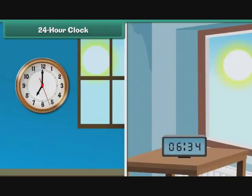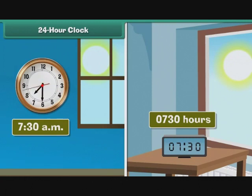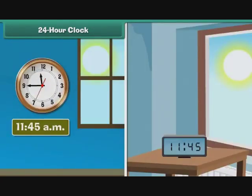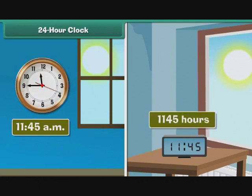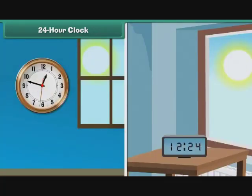It denotes the start of the day as 0000 hours and the end as 2400 hours. The first two digits represent hours and the last two represent minutes. Both the 12-hour and 24-hour clocks denote the first 12 hours of the day in an identical manner. 7.30 a.m. on the 12-hour clock is represented as 0730 hours on the 24-hour clock. Similarly, 11.45 a.m. is represented as 1145 hours. The 24-hour clock denotes all times corresponding to a.m. with values smaller than 1200. After 12 noon, the two clocks differ in their representation of time.